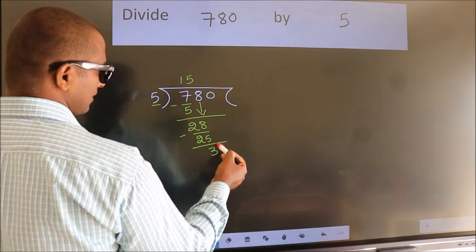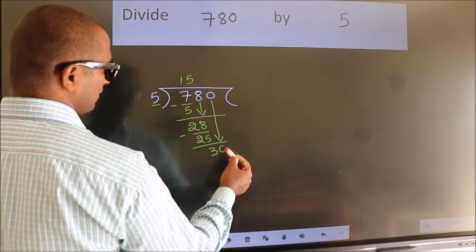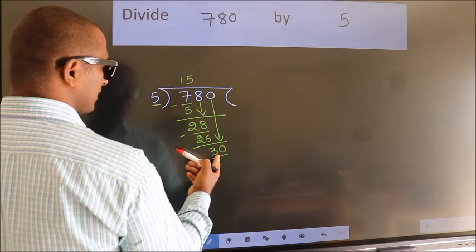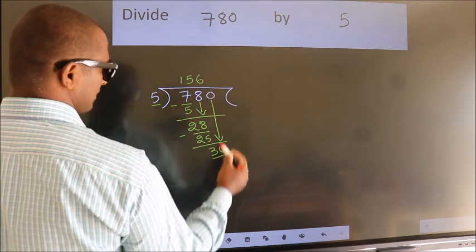After this, bring down the beside number. So, 0 down. So, 30. When do we get 30 in the 5 table? 5 times 6 is 30.